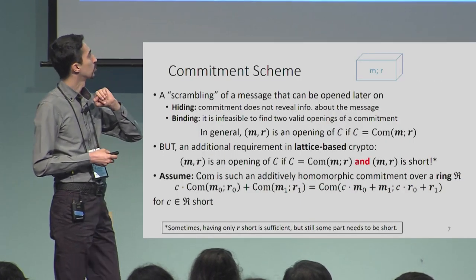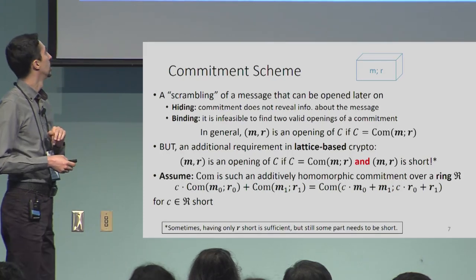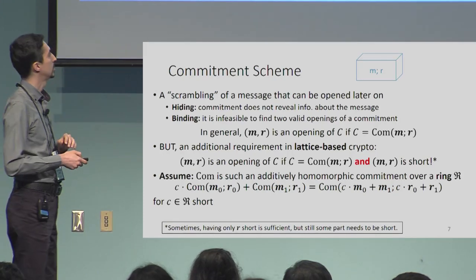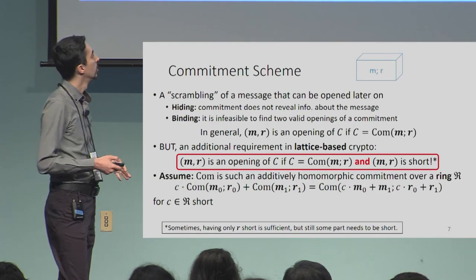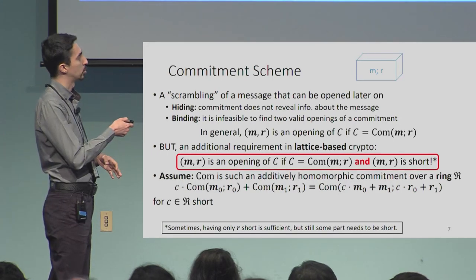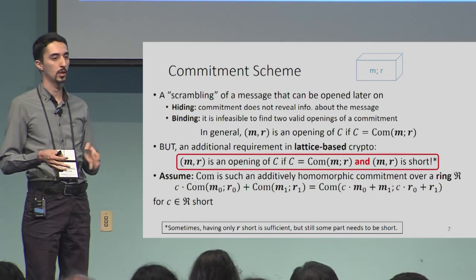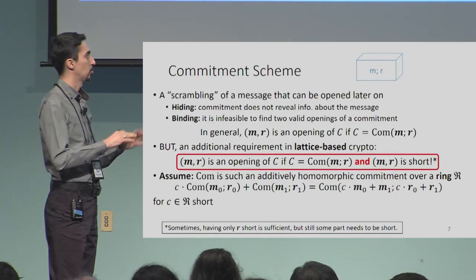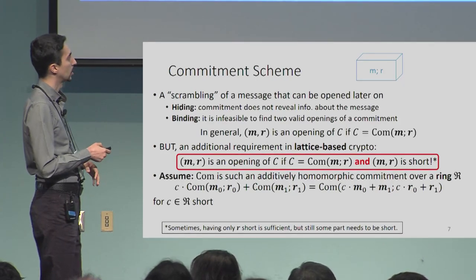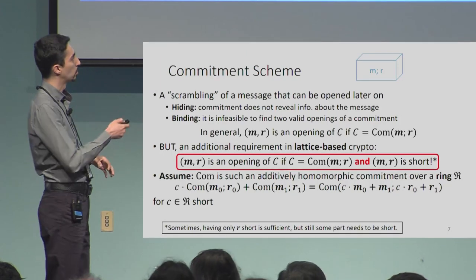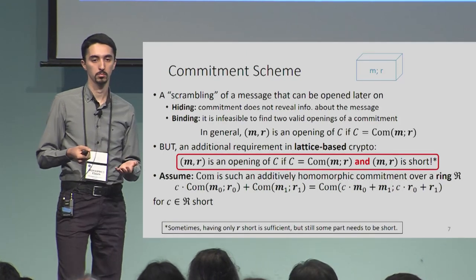There are also commitment schemes. The important thing is that this is just a homomorphic function where the inputs must be short. This is the requirement for lattice-based commitment schemes — we have an additively homomorphic commitment scheme where whatever goes into the commitment brackets must be short.